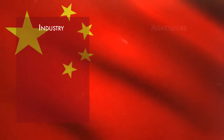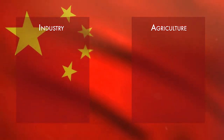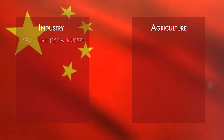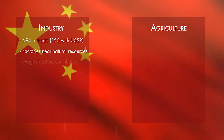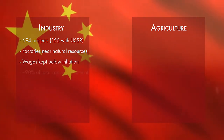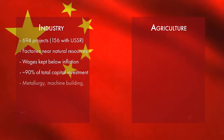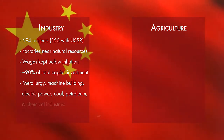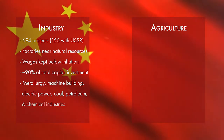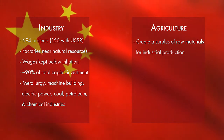Overall focus was to be put on heavy industry, with the explicit subordination of agriculture to the needs of industrial development. In industry, there were 694 major projects to be undertaken as part of the plan, with 156 carried out with Soviet assistance. All new factories were to be built near deposits of natural resources, and wage inflation was to be kept below productivity and capital growth. In agriculture, the main focus was to be put on creating a surplus of raw materials, as well as grain, which would then be invested back into industry.